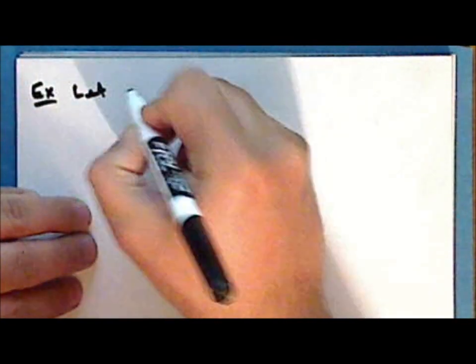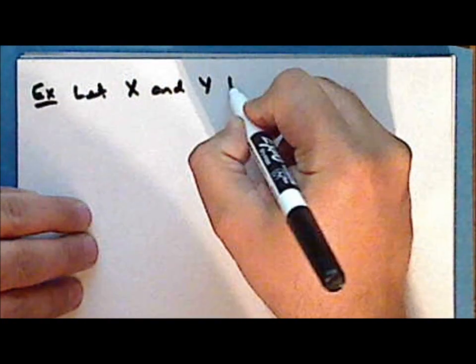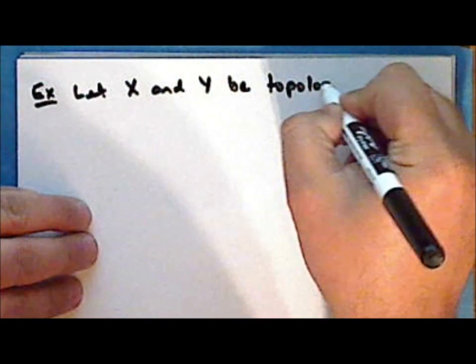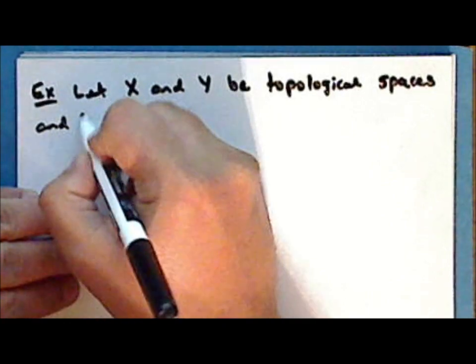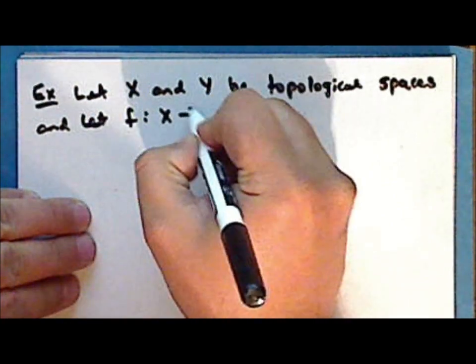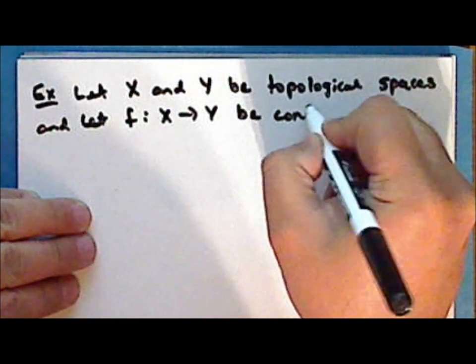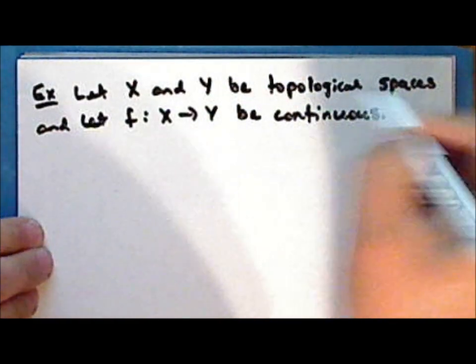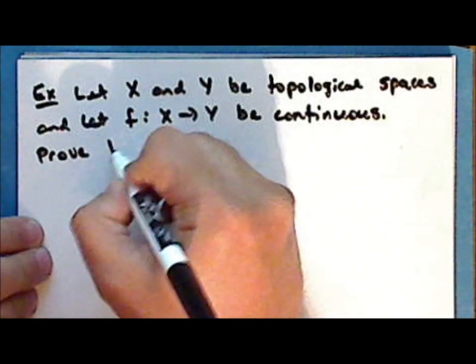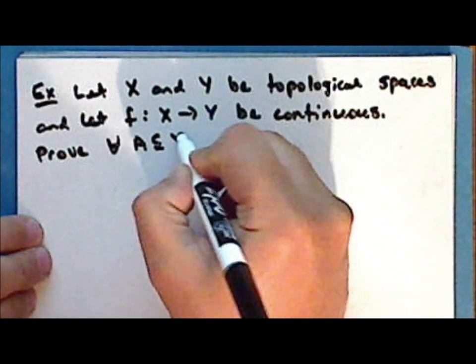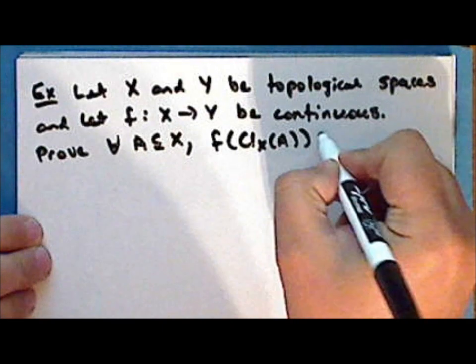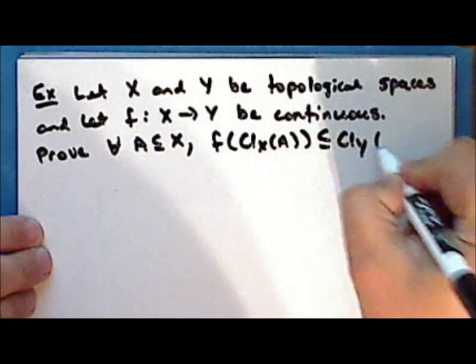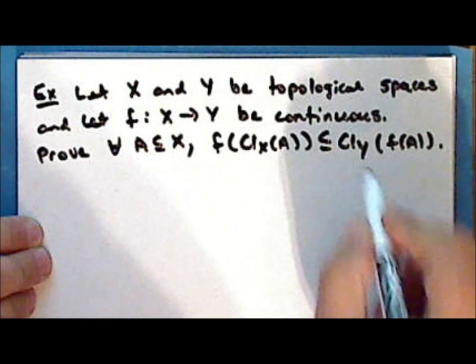As a second exercise, let x and y be topological spaces, and let the function f mapping x into y be continuous. Prove that for every subset A of the domain space x, the direct image of the closure of A in x is a subset of the closure of the direct image of A in y.